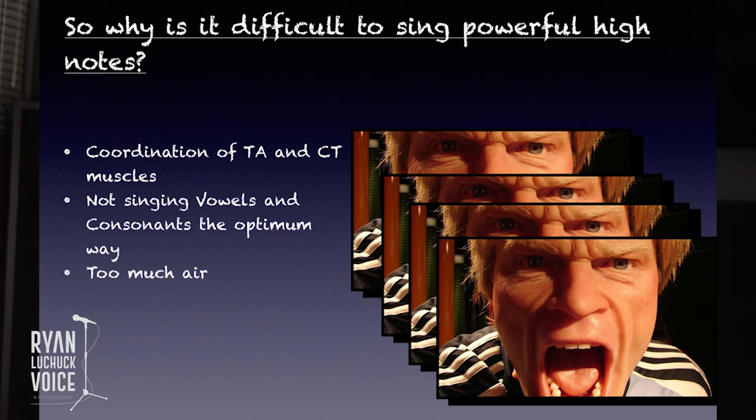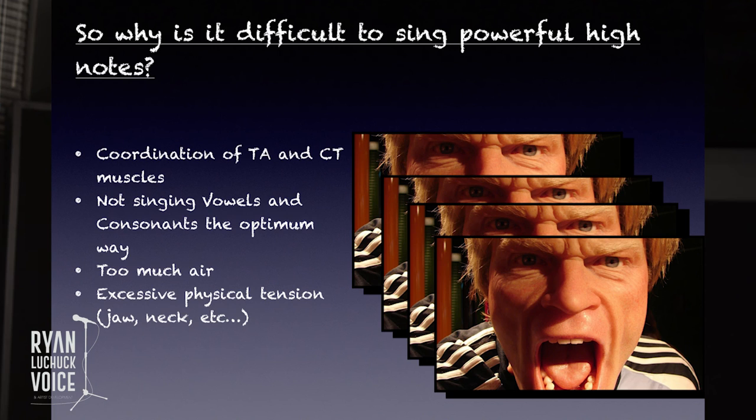Too much air — if you blow too much air, you can overwhelm the entire system, and then you have to use more muscle tension to force coordination to happen. The last reason is general excessive physical tension. Sometimes people come in for a lesson and the stresses of the day are getting to them — they're just tight. The jaw in particular is often very tense; people grind their teeth at night. And if you're tense in your jaw, it's likely to cause tension in the laryngeal area as well.